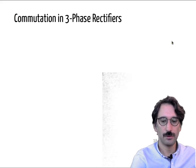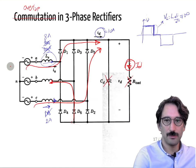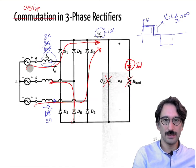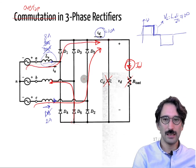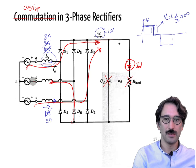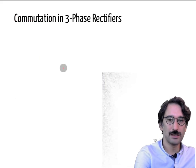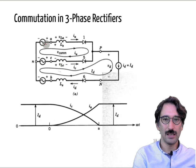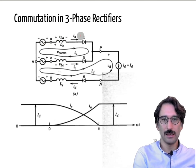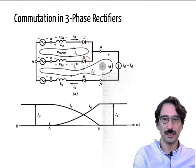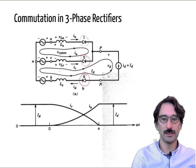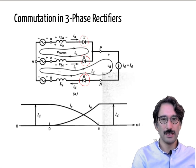During that instant I have phase A through D1 and phase C through D5, with the current source and the return path through phase B. If I simplify that circuit: D1 is conducting, D5 is conducting, and the return path is through diode 6. Now let's write the Kirchhoff voltage equations for that circuit.